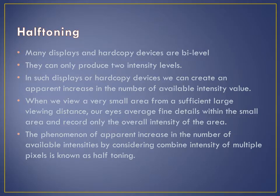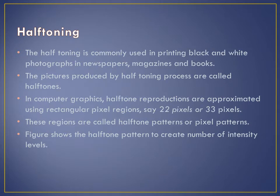Many display and hardcopy devices are bi-level — they can only produce two intensity levels. For such display or hardcopy devices, we can create an apparent increase in the number of available intensity levels. When viewing a very small area from a sufficiently large viewing distance, our eyes average fine detail within the small area and record only the overall intensity. This phenomenon of apparent increase in the number of available intensities by considering the combined intensity of multiple pixels is known as half-toning.